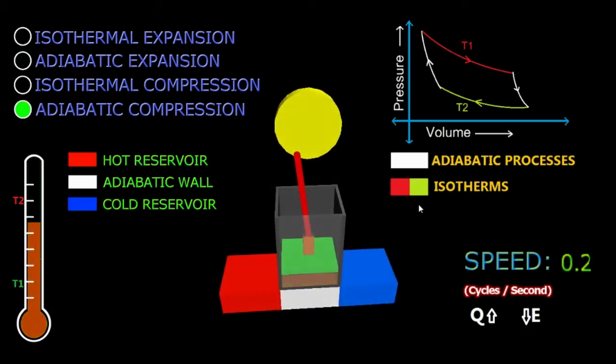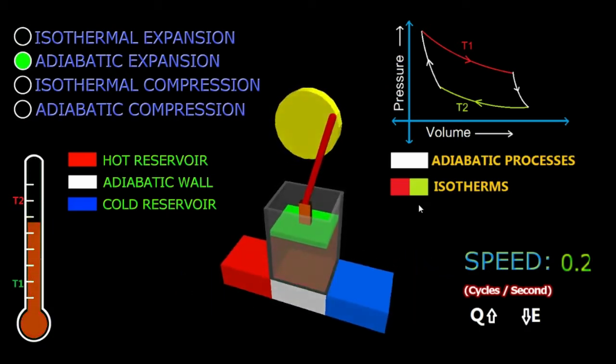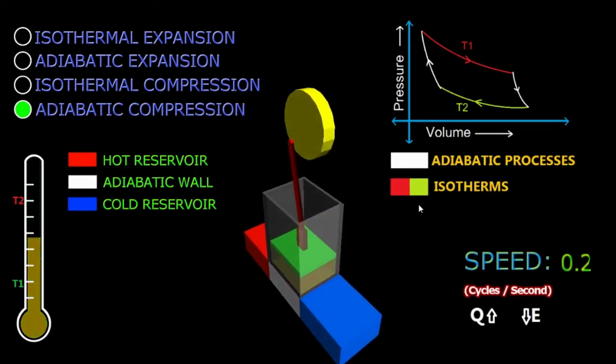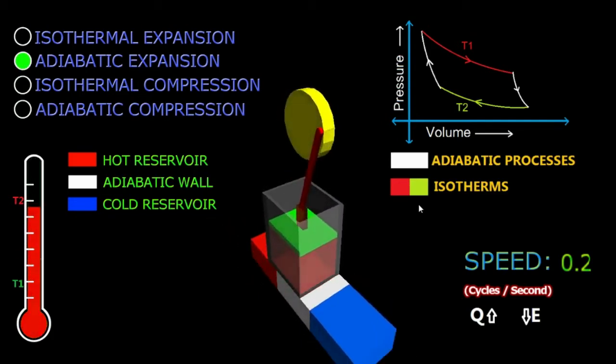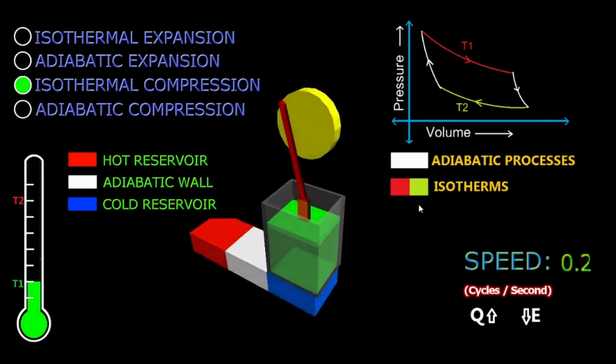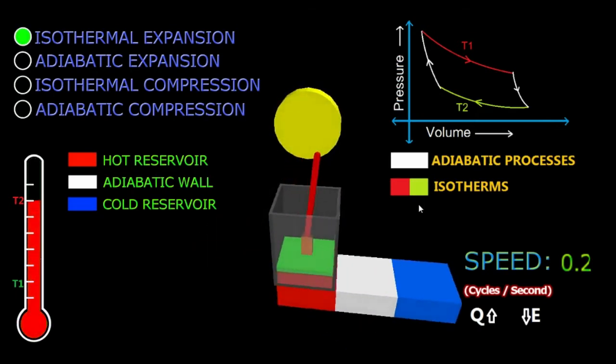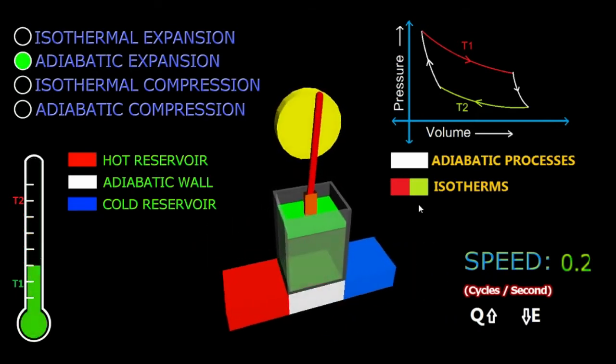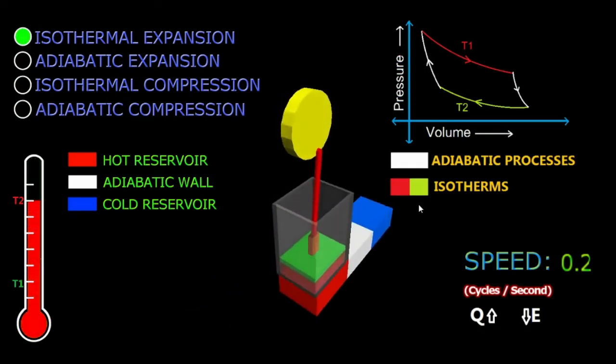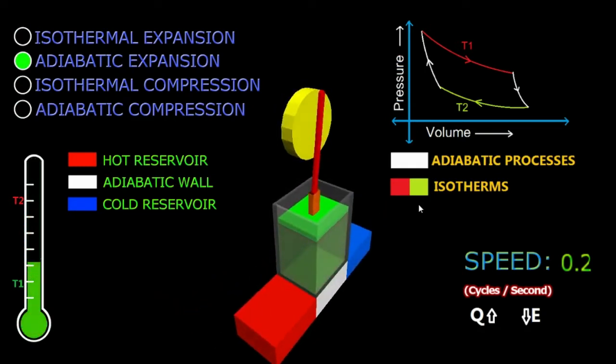The white colored slab is the adiabatic wall. Whenever this white slab is below the cylinder, no heat exchange is taking place. The red colored slab, the hot reservoir, gives heat into the system. And the blue colored slab takes heat out of the system.